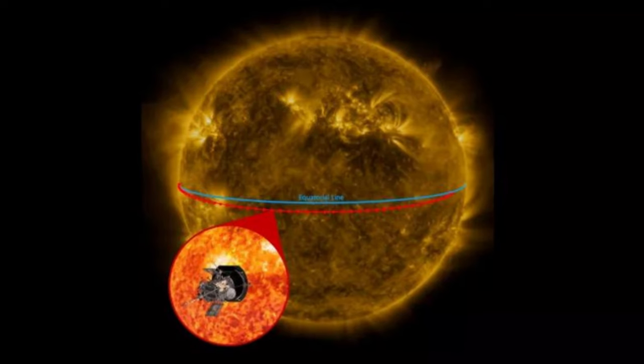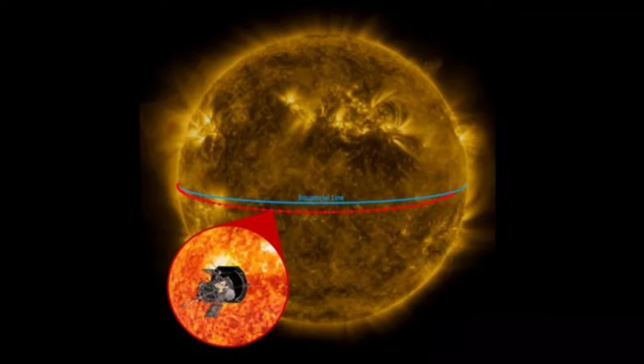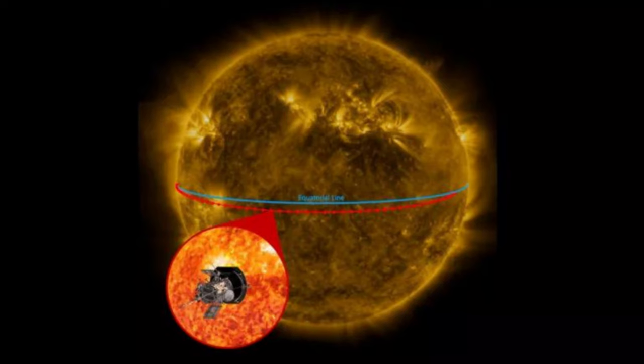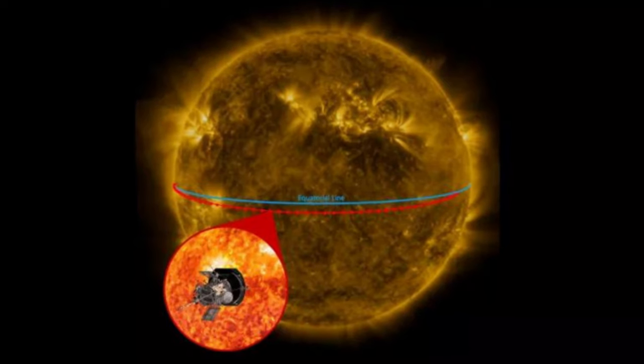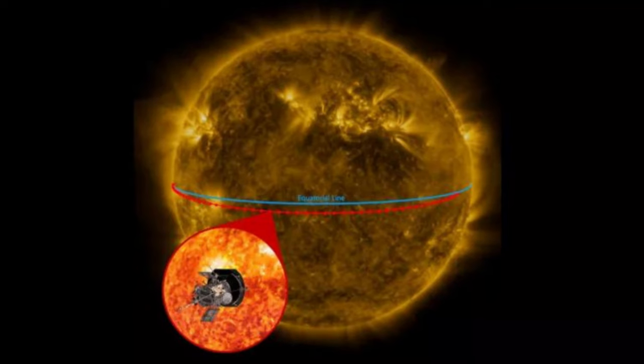Telescopes on Earth and in space had the sun safely in their sights when NASA's Parker Solar Probe made its 11th daring close flyby of the star on February 25, all to understand more about the sun's behavior.